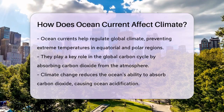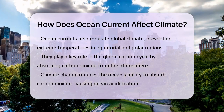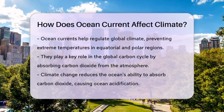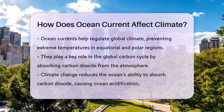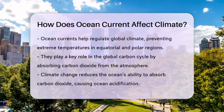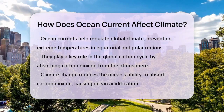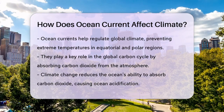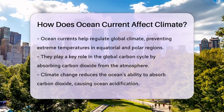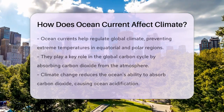In addition to distributing heat, ocean currents are vital for the global carbon cycle. The ocean absorbs carbon dioxide from the atmosphere, which helps mitigate global warming. However, as the ocean warms due to climate change, its ability to absorb carbon dioxide is reduced, leading to increased ocean acidification and harm to marine life.